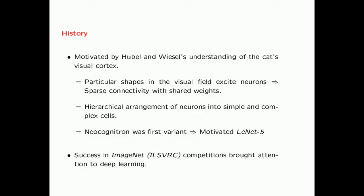Convolutional neural networks are one of the networks motivated by neuroscience — in particular, by Hubel and Wiesel's understanding of the cat's visual cortex. Key observations were that particular shapes in the visual field excite neurons, and there is sparse connectivity in which small regions of the neural field can excite neurons. Similarly, in a convolutional neural network, you have sparse connectivity corresponding to small portions of the visual field, and there are shared weights so that the same weights are used across all parts of the visual field to extract the same types of shapes.